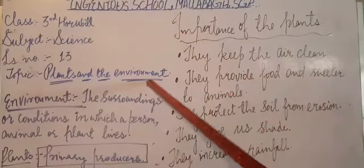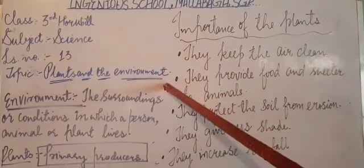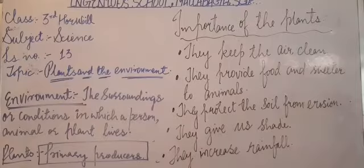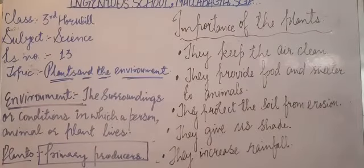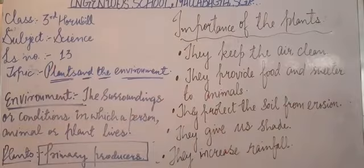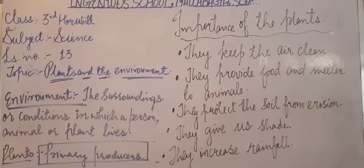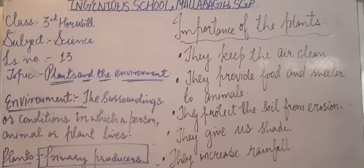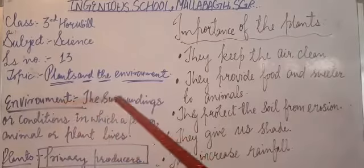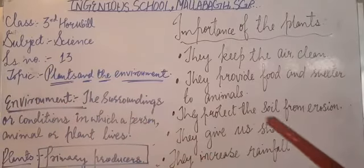So, what is this environment? Environment can be defined as the surroundings or the conditions in which a person, animal, or plant lives. We live in a kind of environment where we are dependent upon all living things and all non-living things. So, our environment is constituted of all the living and non-living things.